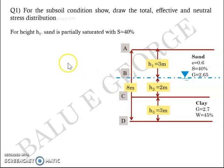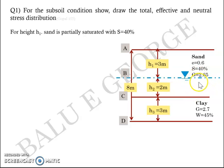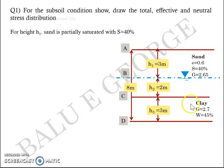For height H1, the soil is partially saturated with S = 0.4. Below the water table, S = 1 (100%), since it is below the water table. We need to find the unit weight of soil in the zone above the water table, in the zone below the water table, and also for the clay layer.